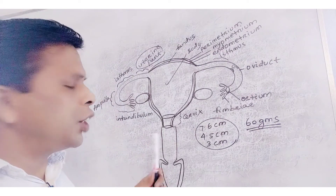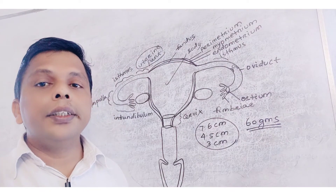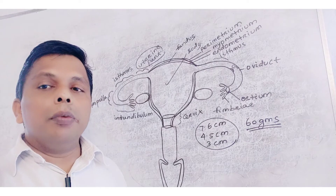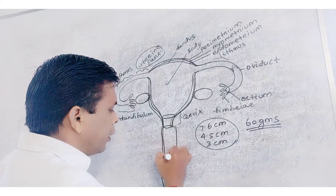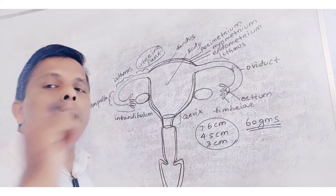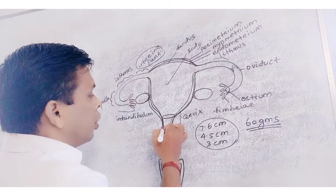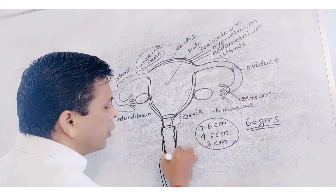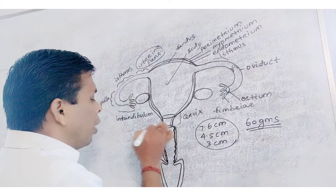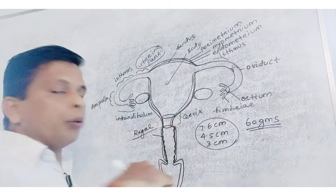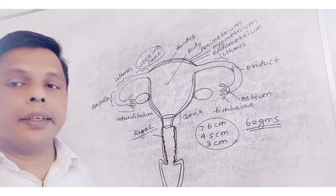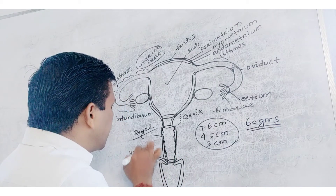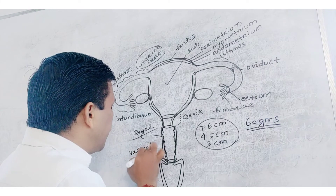Next to uterus is the vagina. The vagina is the chamber for copulation. The inner part of vagina is lined by stratified squamous tissue. This stratified squamous tissue resists friction and carries rugae — the irregular thickening of vagina called as rugae. The vagina opens to outside through the vaginal orifice.